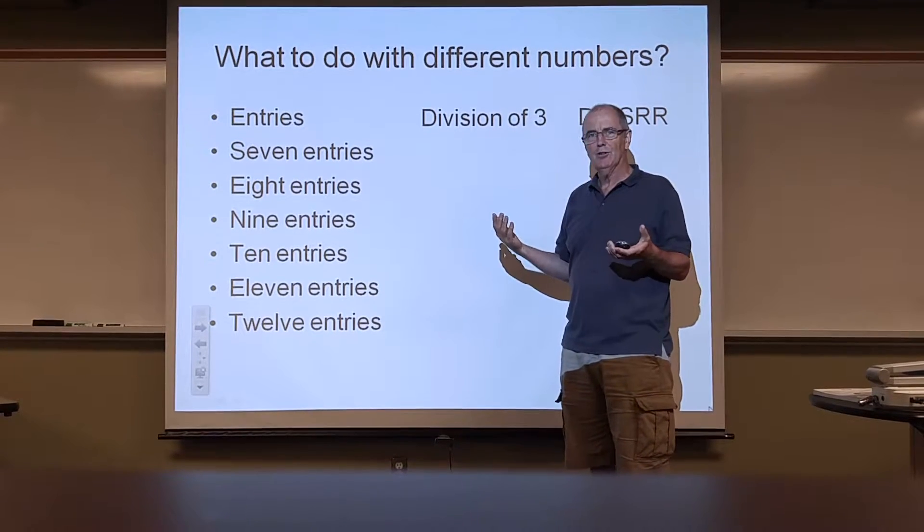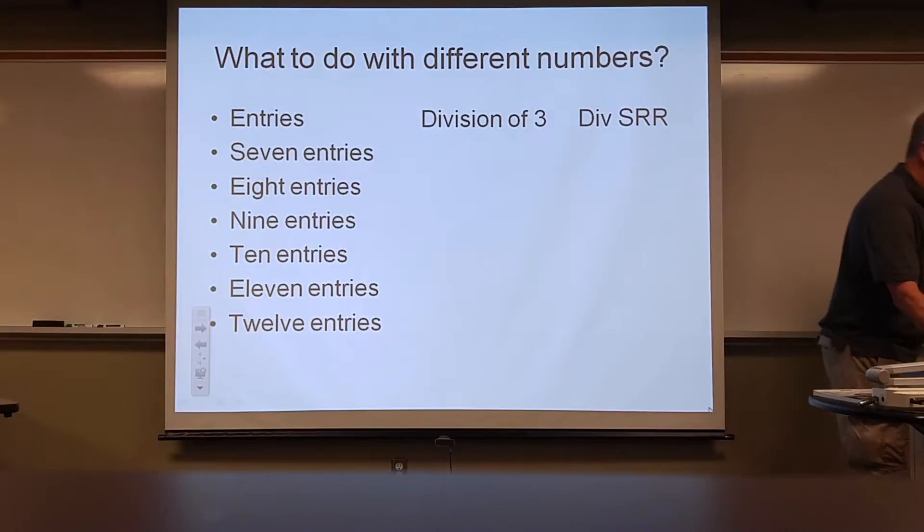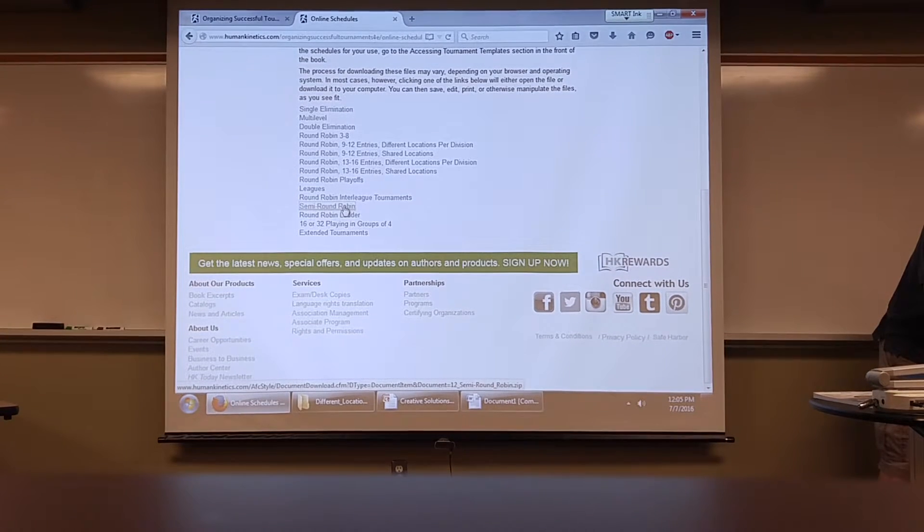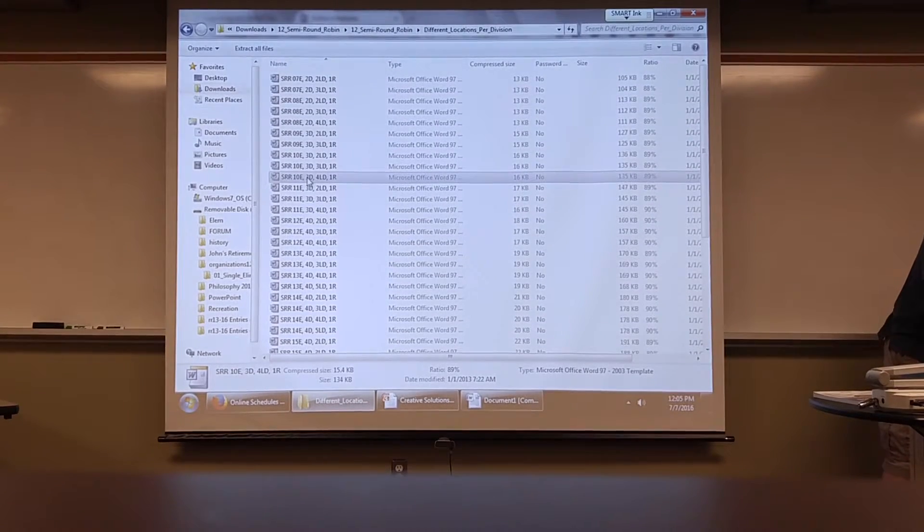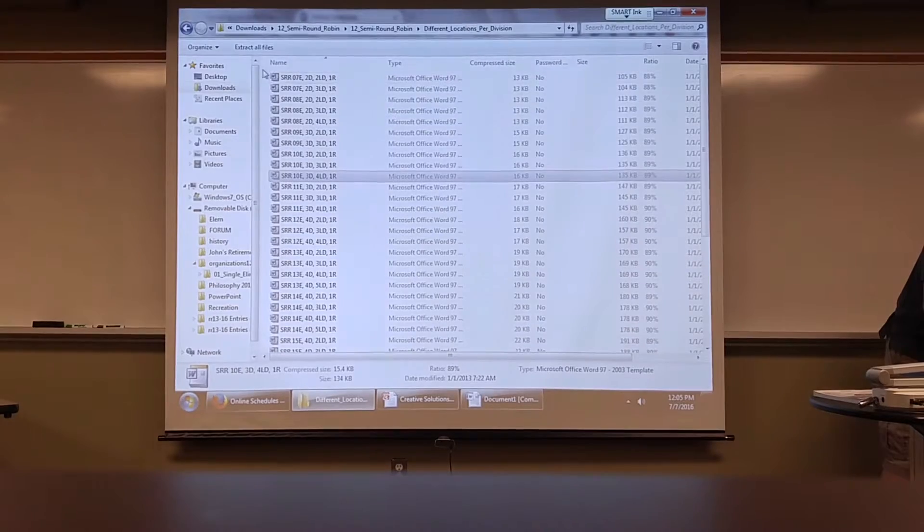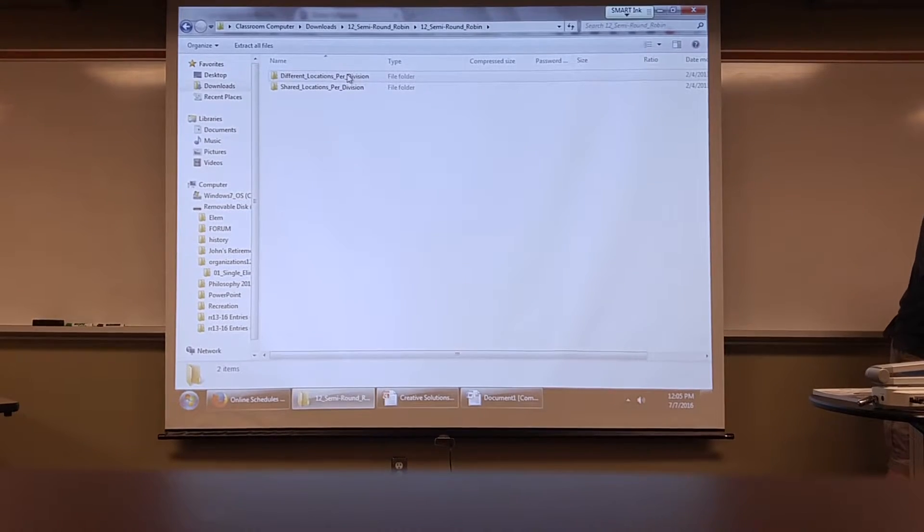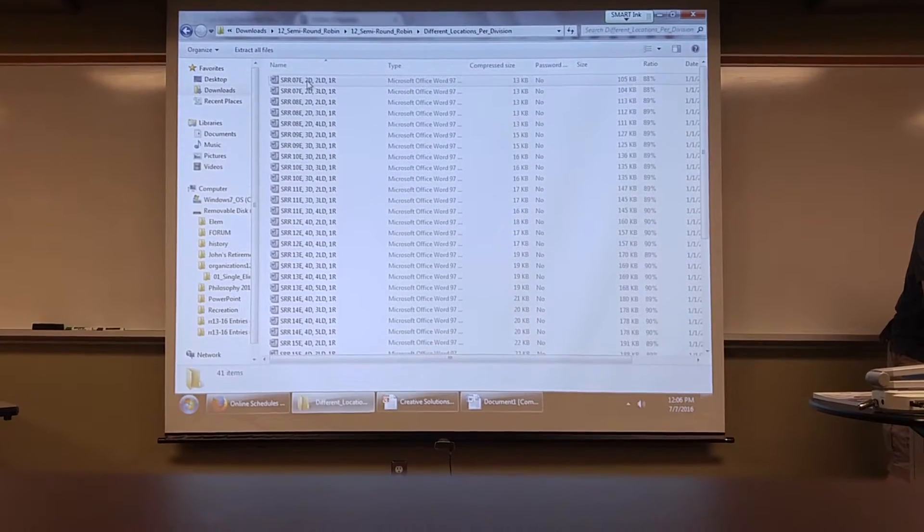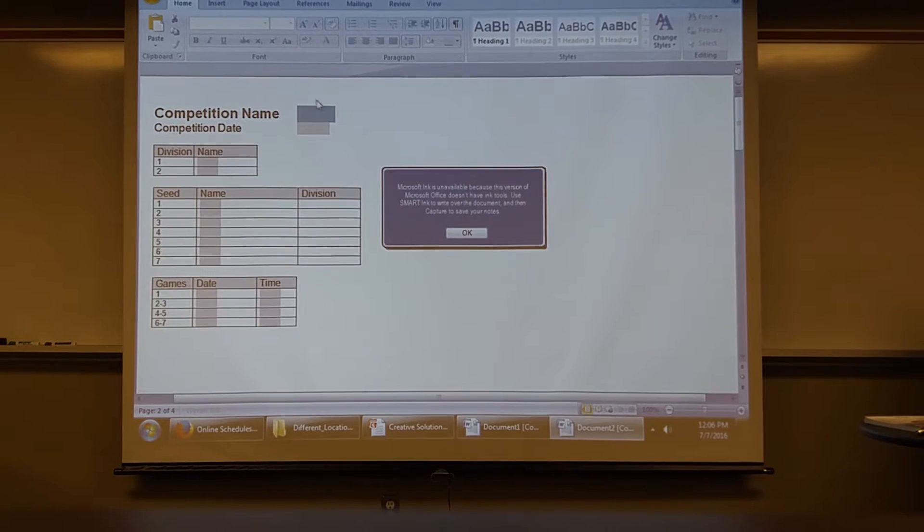And we would still know who came in first and second in those different formats. We can do this one online as well, by downloading semi-round robin from the Human Kinetics website. And basically, here we go. So we just downloaded it. We then go to our downloads, semi-round robin. And you can either have them playing on different locations or shared locations. So let's just go to different locations for now. So in the baseball example of seven entries on two divisions, two locations that are different, going through one time, we could pick it out like this.